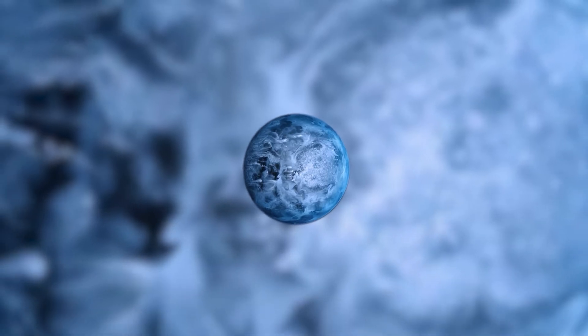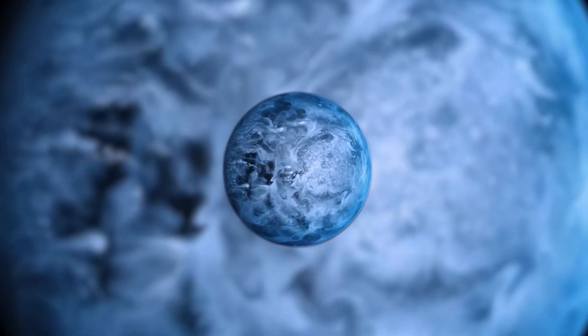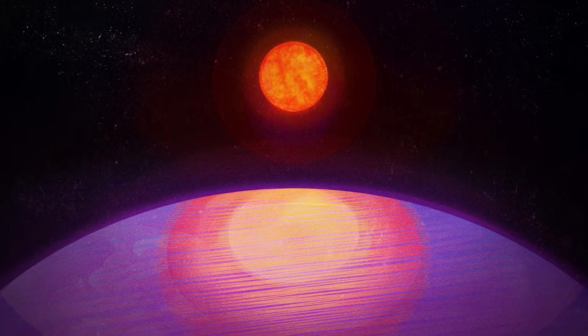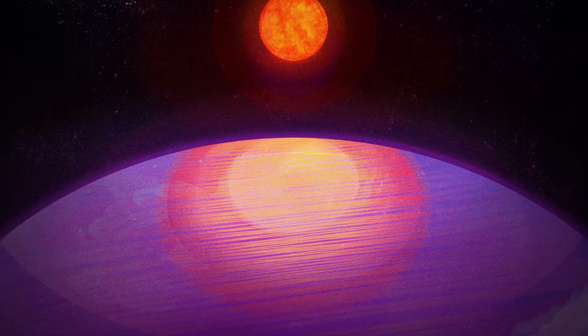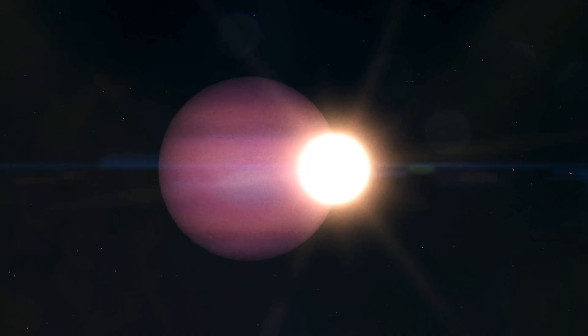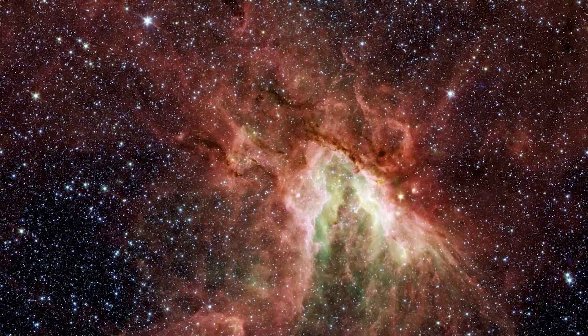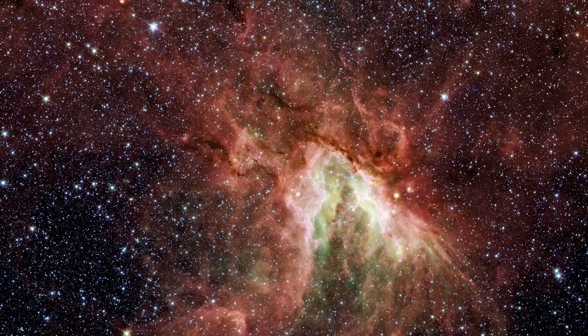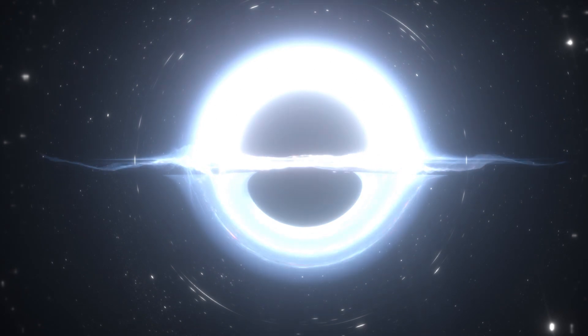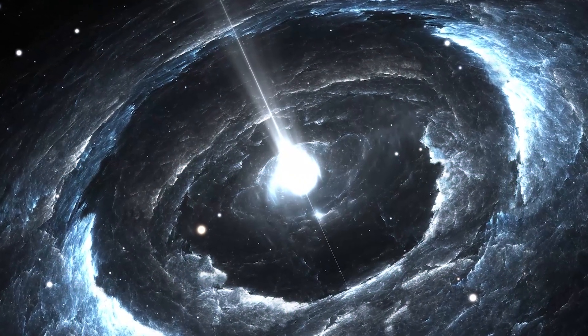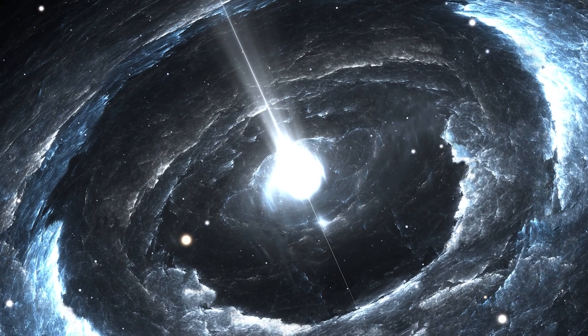Then there's this other planet called PSR J-1719-1438b, which is crazy huge compared to its star. Imagine a planet that's way bigger than the star it orbits around. But here's the twist. This planet wasn't always a planet. It used to be a star. It's like it had a totally different job before.